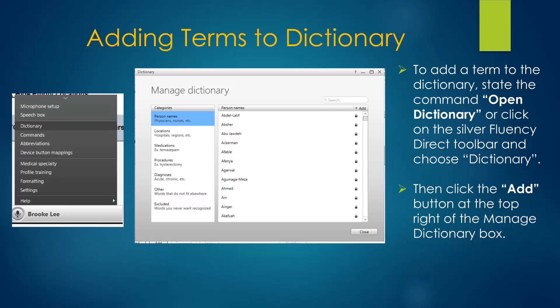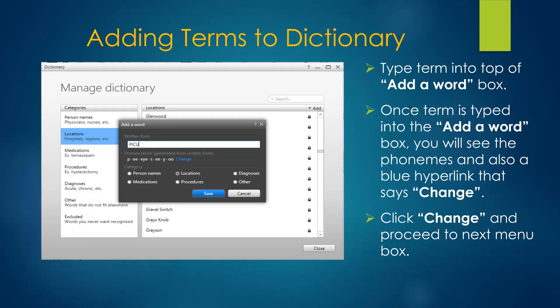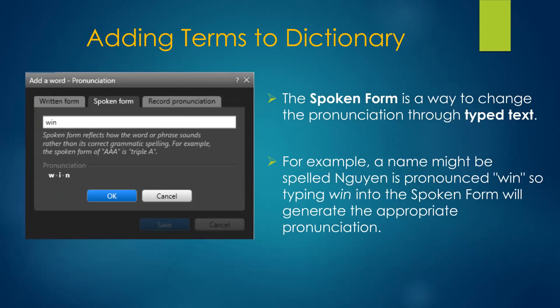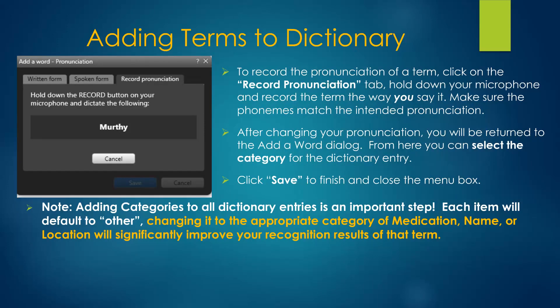Terms may be added to the dictionary at any time with the command Open Dictionary, or by clicking on the Fluency Direct toolbar and selecting Dictionary. Then click on the word Add. Typing the term will cause Fluency to suggest a pronunciation by displaying phonemes. Click on Change for editing options. Choose the appropriate tab to edit the written form, the spoken form, or record the pronunciation. Spoken form allows you to associate the sound of the verbalized word with the written form. Record pronunciation will teach Fluency the way you pronounce the word.